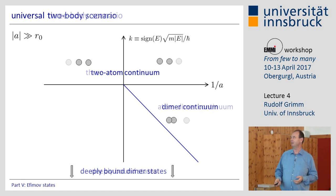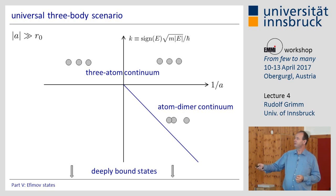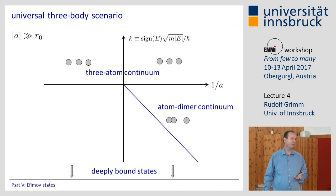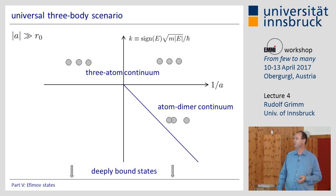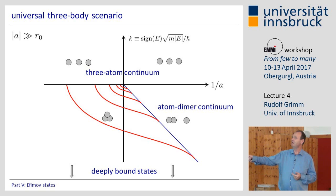Let me just add one atom. Now, this is the three-body continuum, and this is the atom-dimer continuum where I can have a dimer and an atom with some additional kinetic energy. Below I have very deep-bound states, and here I have a region which is empty at the moment — but what can happen here is I can have trimer states. This is the situation considered by Efimov, and he found trimer states — not only one, but an infinite series of trimer states. These states connect in the region of negative scattering lengths to the triatomic threshold and to the atom-dimer threshold.